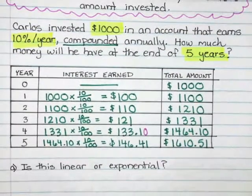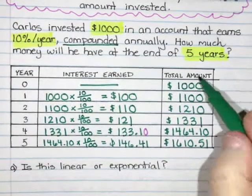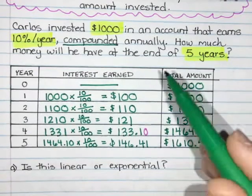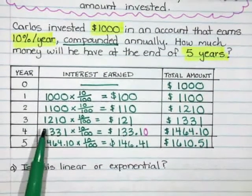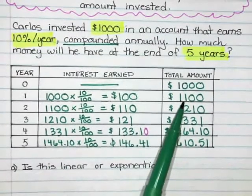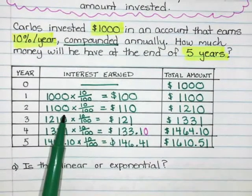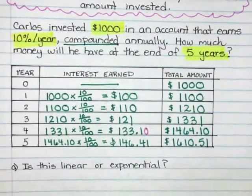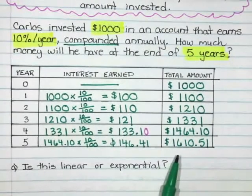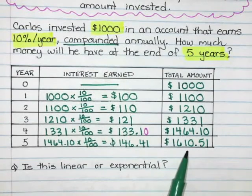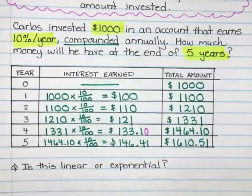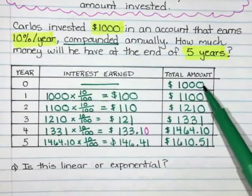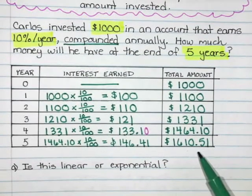Compound interest is a little more complicated to calculate than simple interest. With simple interest, we only calculated the interest once and kept adding the same number. With compound interest, you always take your current balance and find the percentage of that, over and over again. In the end, Carlos would have $1,610.51 — that's $610.51 in interest, which is the difference between $1,000 and $1,610.51.